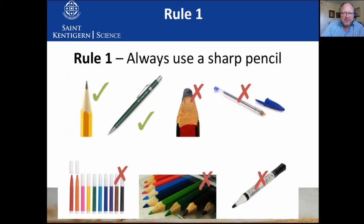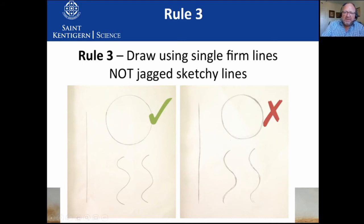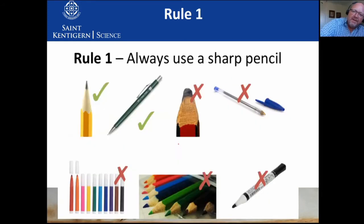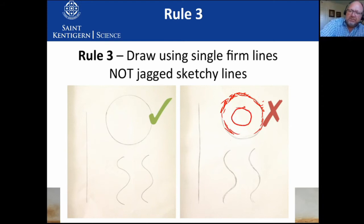Rule number one: you always use a sharp pencil. We're not going to use a builder's pencil, a pen, or even coloring pencils in scientific diagrams — just a sharp pencil or a mechanical sharp pencil. When you draw straight lines, you use a ruler. Also remember, it's not sketching — sketching is when you make those little repeated strokes to build up a picture. That is not what we do. You simply put it down and draw. No jagged or sketching lines.